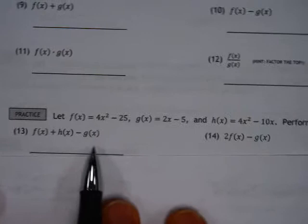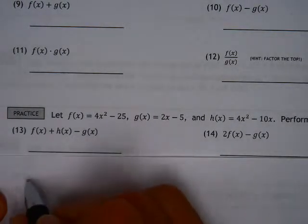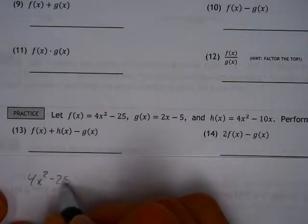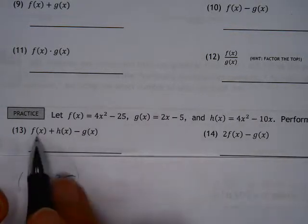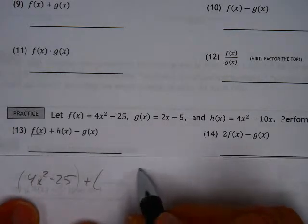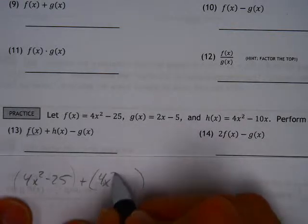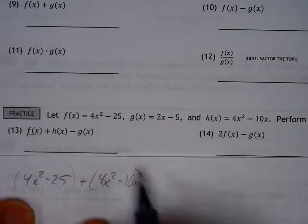f of x plus h of x minus g of x is a combined-like terms thing. So that means we're taking these two terms, this 4x squared minus 25. I'm going to put parentheses around it to identify that as the f of x, plus h of x. Now h of x is just another binomial with similar terms, 4x squared minus 10x.